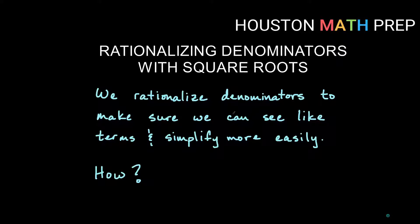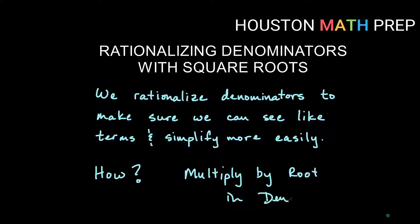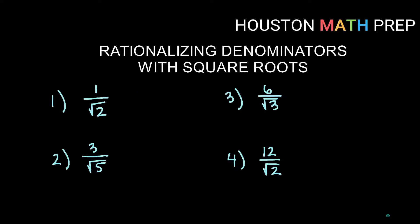If you just have a single term with a square root in it on the bottom, the answer is that we are going to multiply by the root in the denominator. If you are trying to rationalize a two-term denominator, check out our second video on rationalizing denominators — that's with two-term denominators specifically. Let's just jump into some examples.